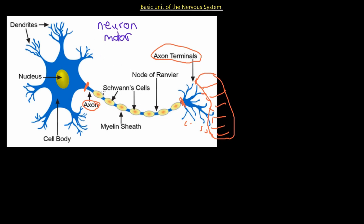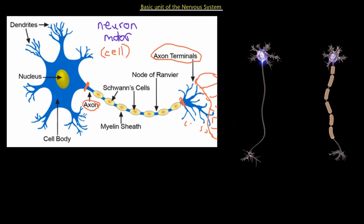Don't worry about the Schwann cells, myelinated sheath, and the node of Ranvier — these will be discussed in great detail in our nervous system lectures. However, this axon shown here does not have a myelinated sheath. Those Schwann cells and the myelinated sheath actually speed up transmission — they increase the speed of the signal being transmitted. The ones that are naked without the Schwann cells are not going to be insulated, and transmission will be much slower.